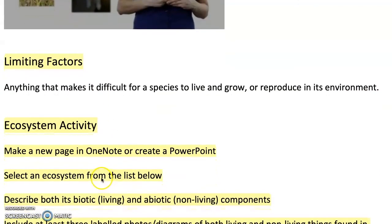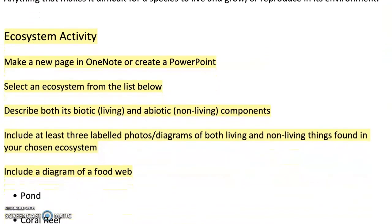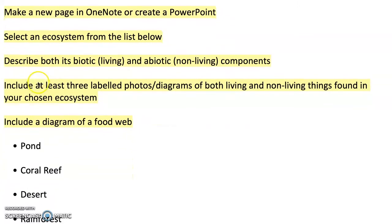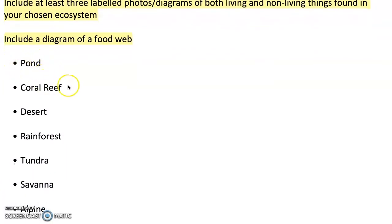I now have an activity for you to do. What we're going to do in this one is you're going to pick an ecosystem. Make a new page in OneNote or create a PowerPoint. Select an ecosystem from the list below: ponds, coral reefs, desert, rainforest, tundra, savannah, or alpine.